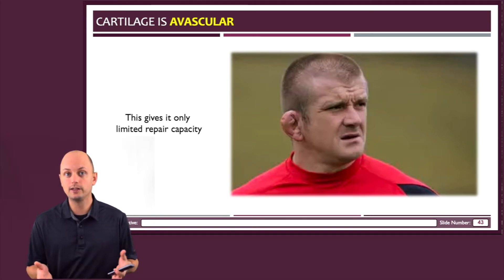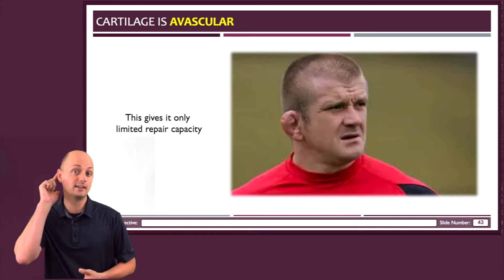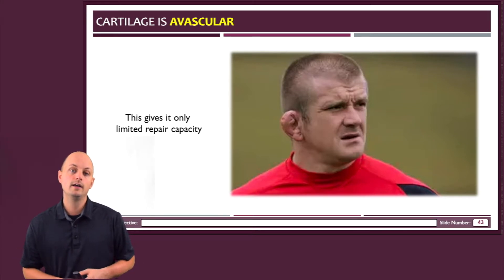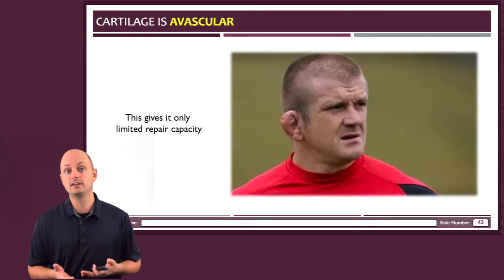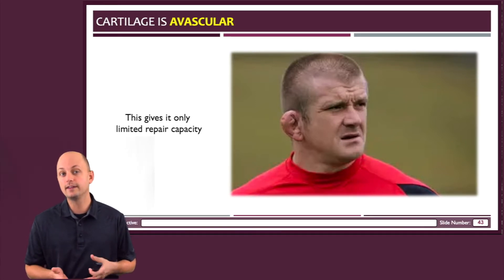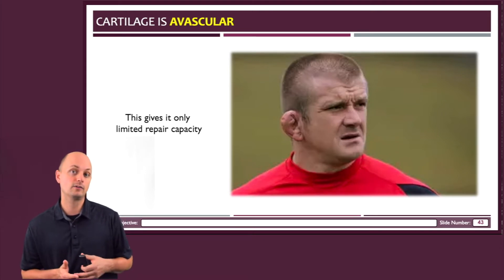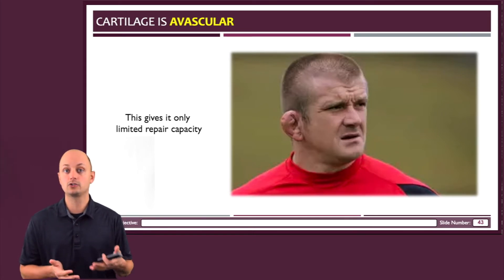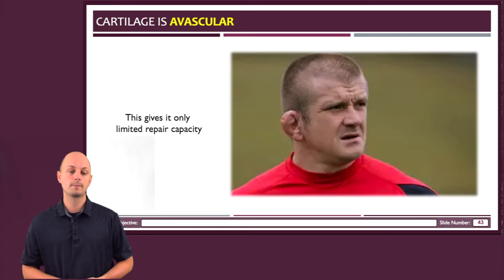If anybody watches rugby, you've probably noticed that many of the players have developed a condition known as cauliflower ear. That happens because the elastic cartilage in the ear gets damaged repeatedly, and it's damaged so often that it can't repair itself fast enough. So the body starts to make mistakes with repair, it starts to take shortcuts, and the cartilage gets replaced with other types of tissue, leading to permanent deformations of the ear.